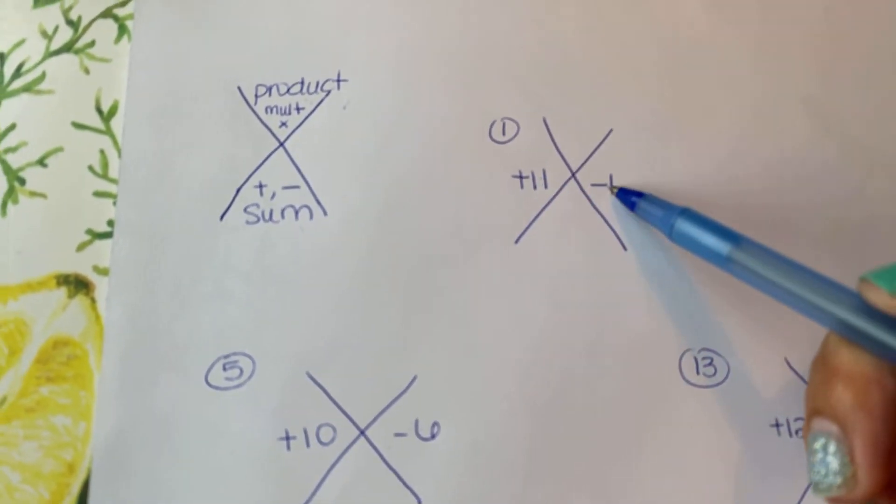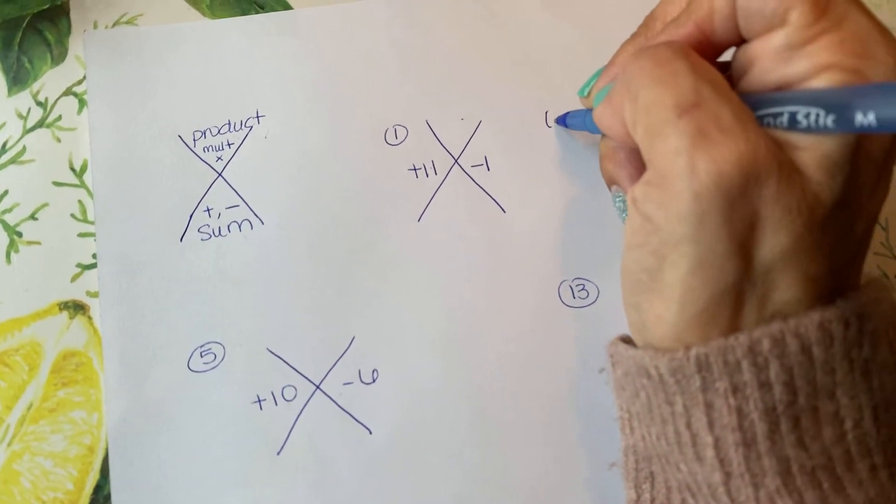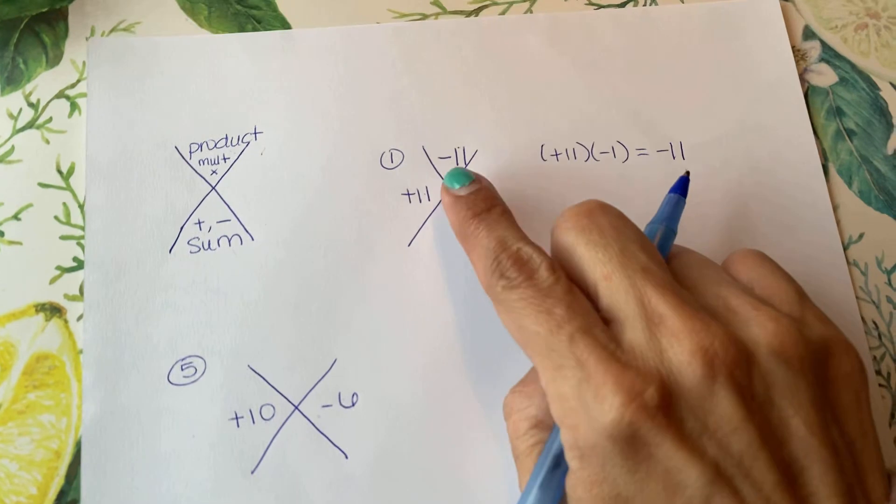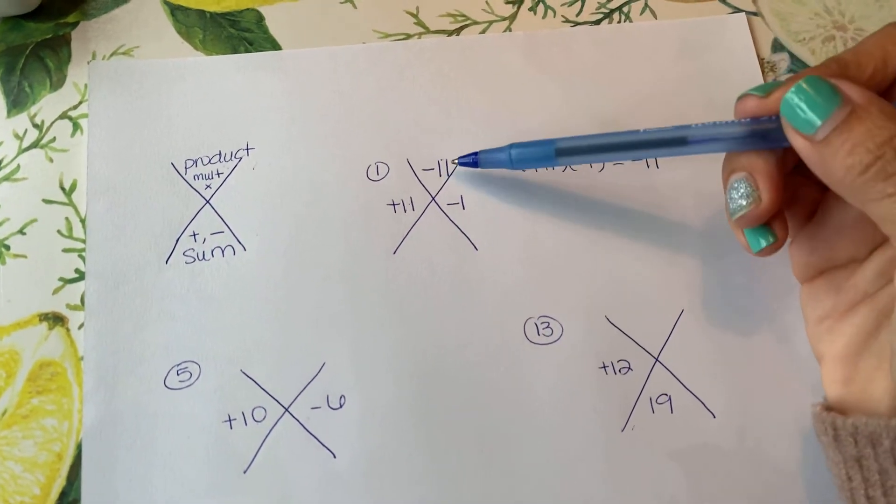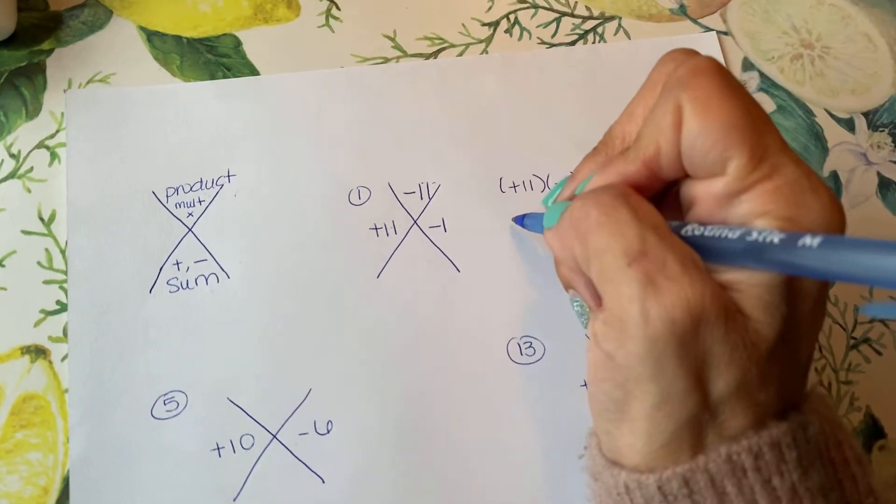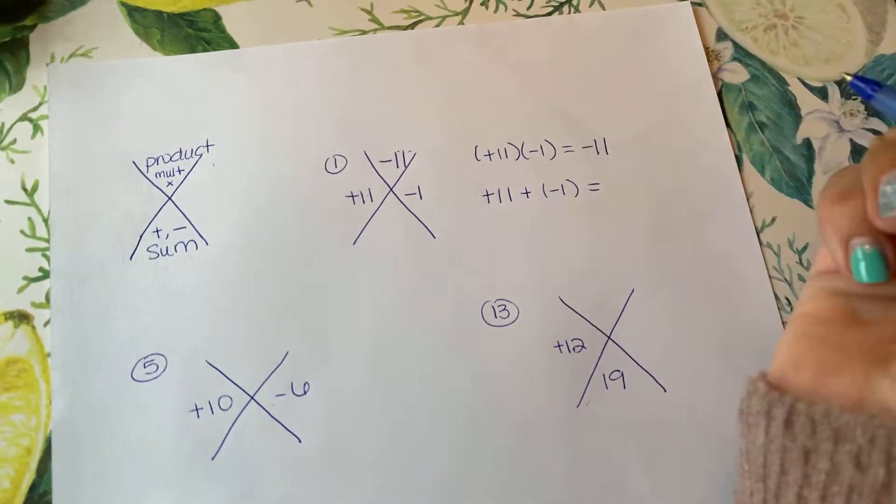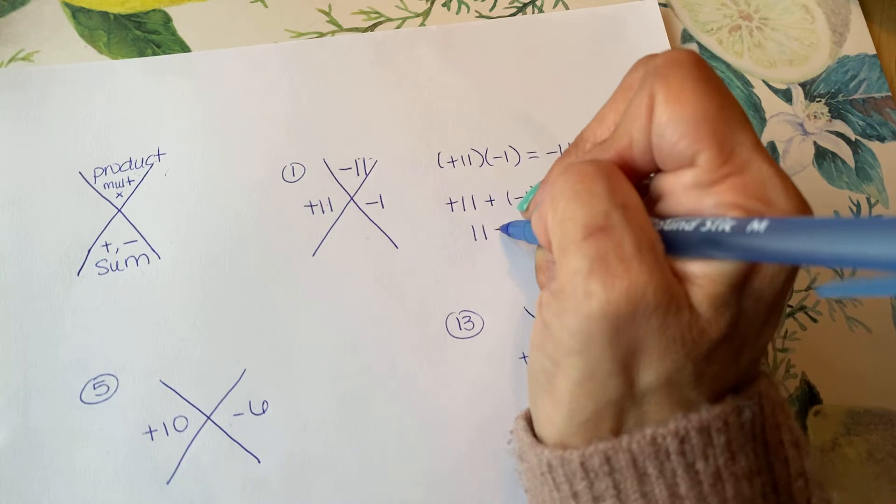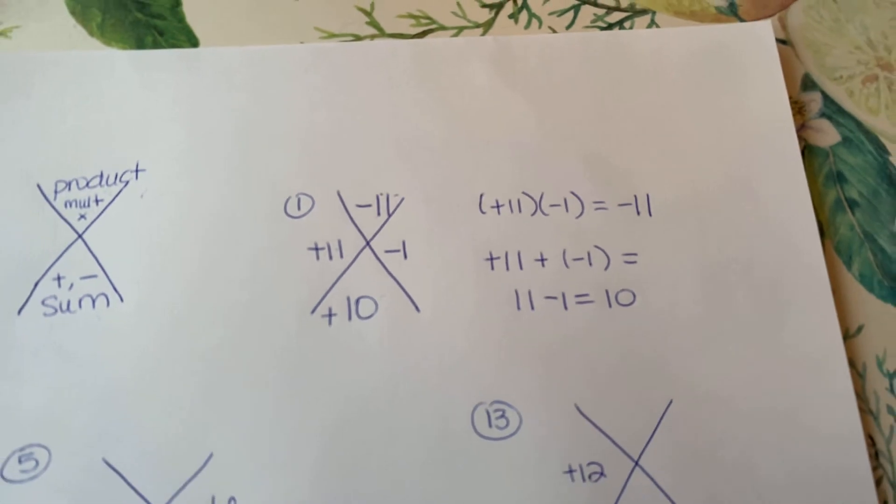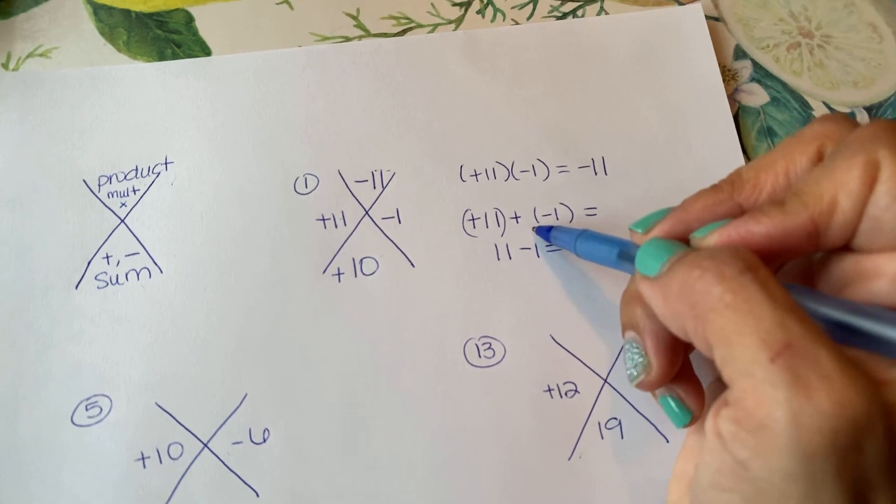Here we go. They give me positive 11 and negative 1. So what's the product of those two numbers? Well what's positive 11 times negative 1? It's negative 11, so that's my product. The bottom is the summation, meaning you add or subtract. So what's positive 11 plus negative 1? You can just go what's 11 minus 1, and you would just get 10. You're essentially taking the two numbers, multiplying them and summing them.